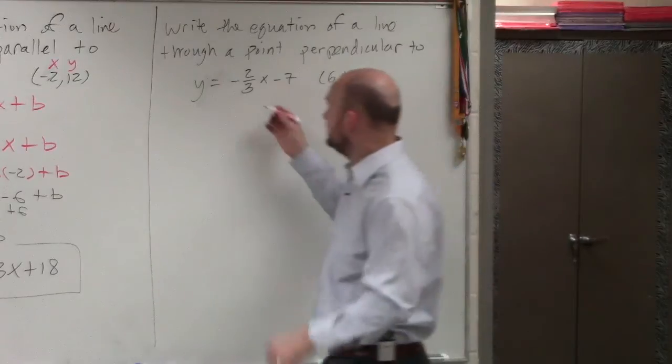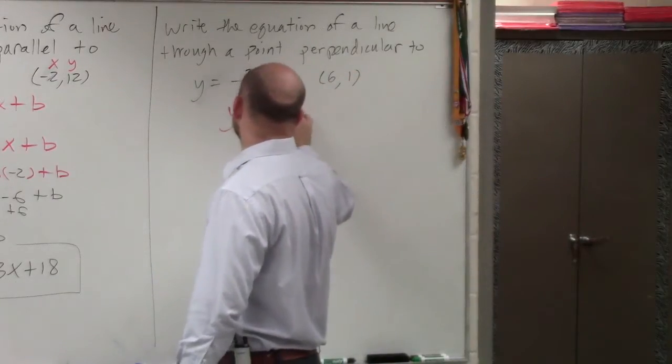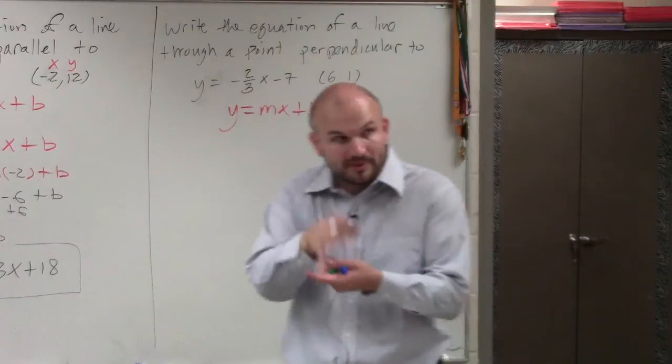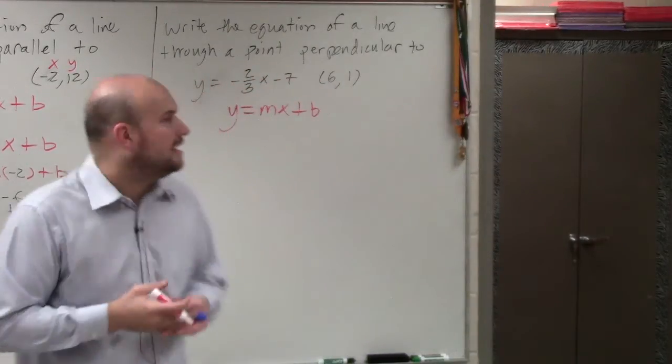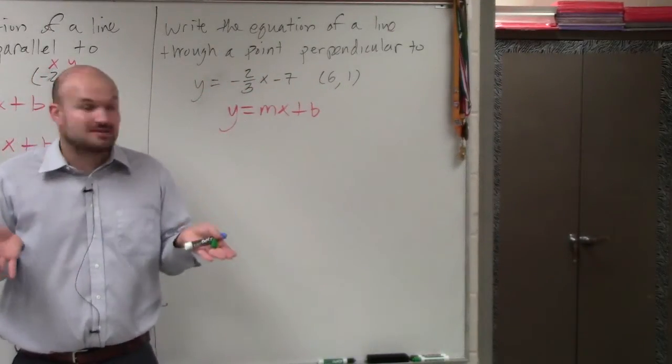Again, the main important thing is we need to write the equation in slope-intercept form. So we need to identify our slope and our y-intercept. Now, parallel lines we know have exactly the same slope.